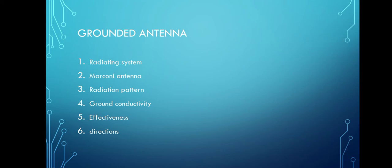It is seen that horizontal directivity improves with the height up to a certain point, after which the pattern of the ground waves changes. The effectiveness is caused by the cancellation of the wave in the horizontal direction because of the opposing currents in various parts of the antenna. At this effective height, the grounded antenna image radiates from the ungrounded antenna.